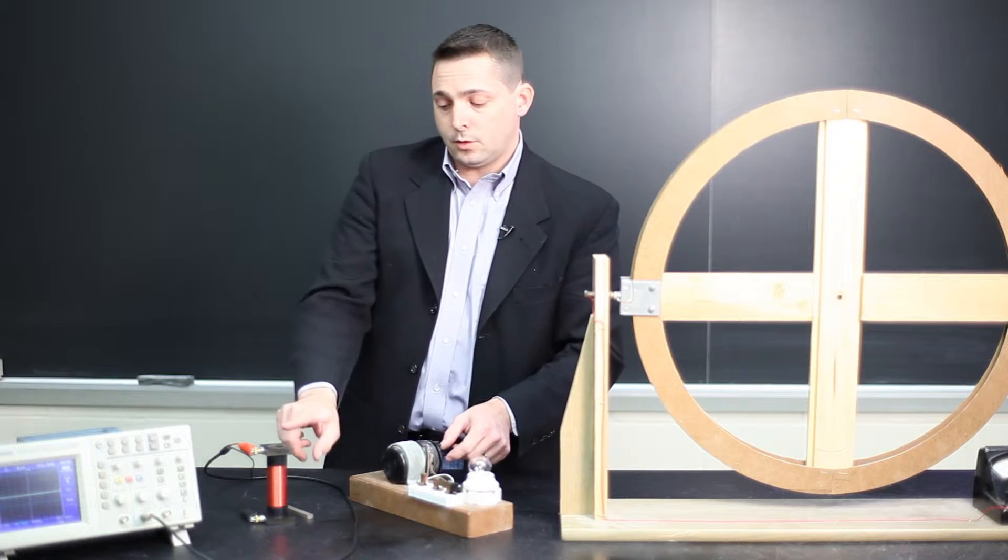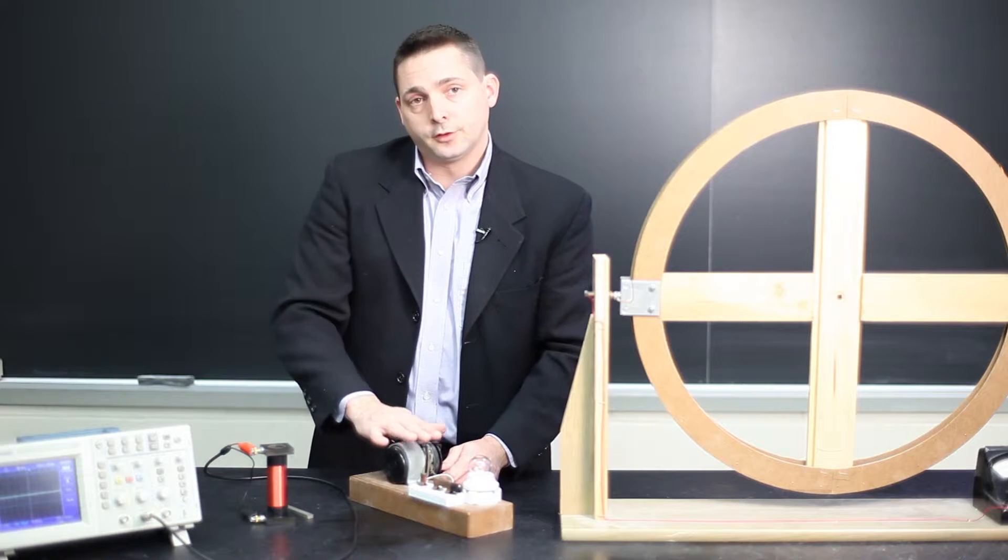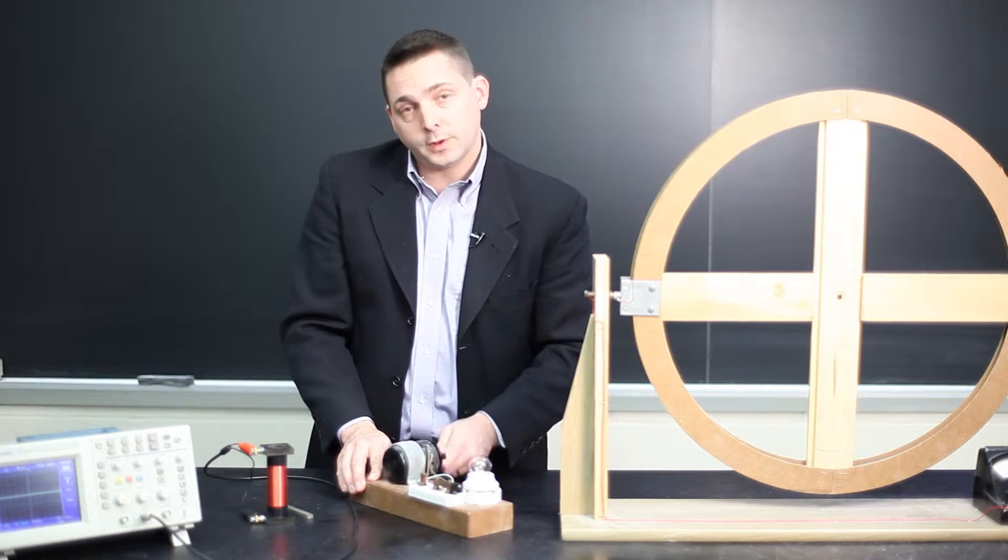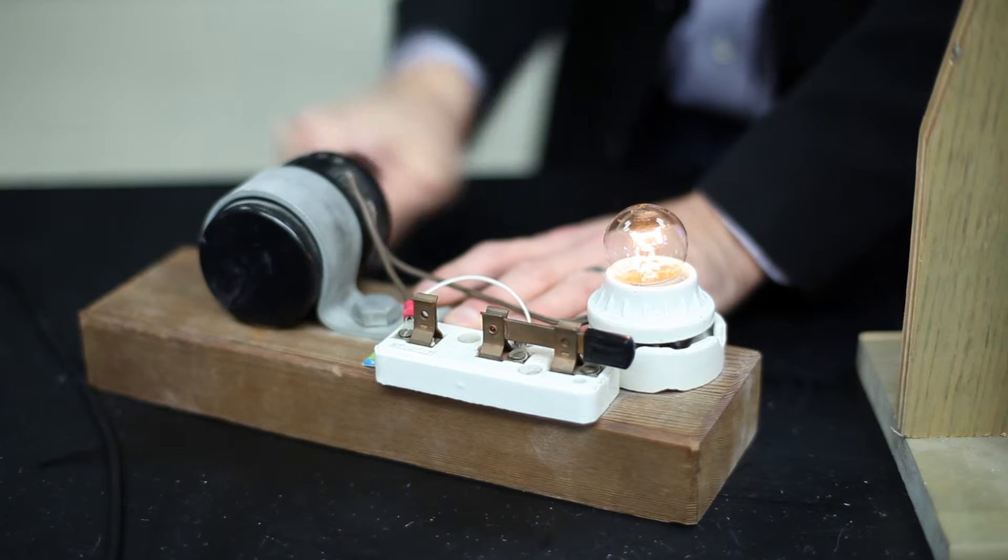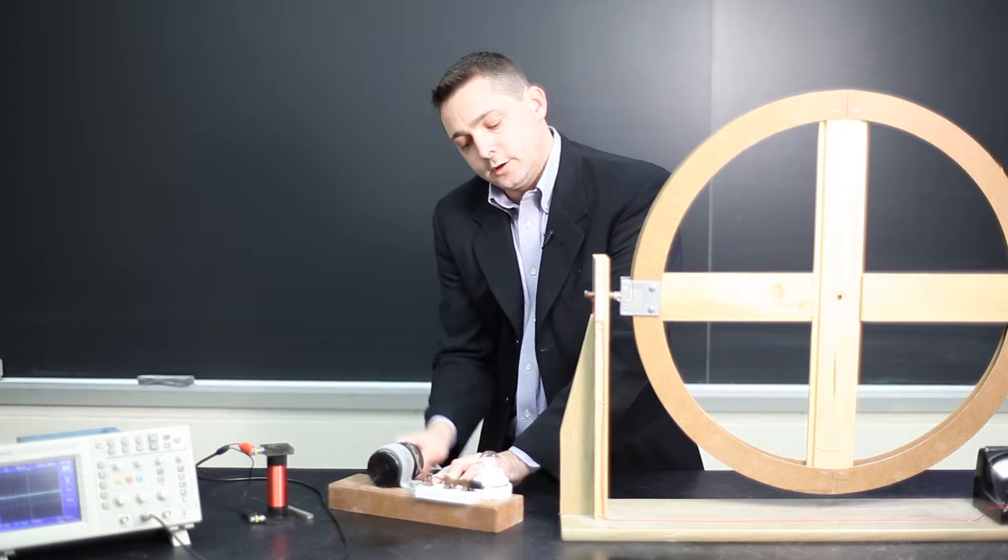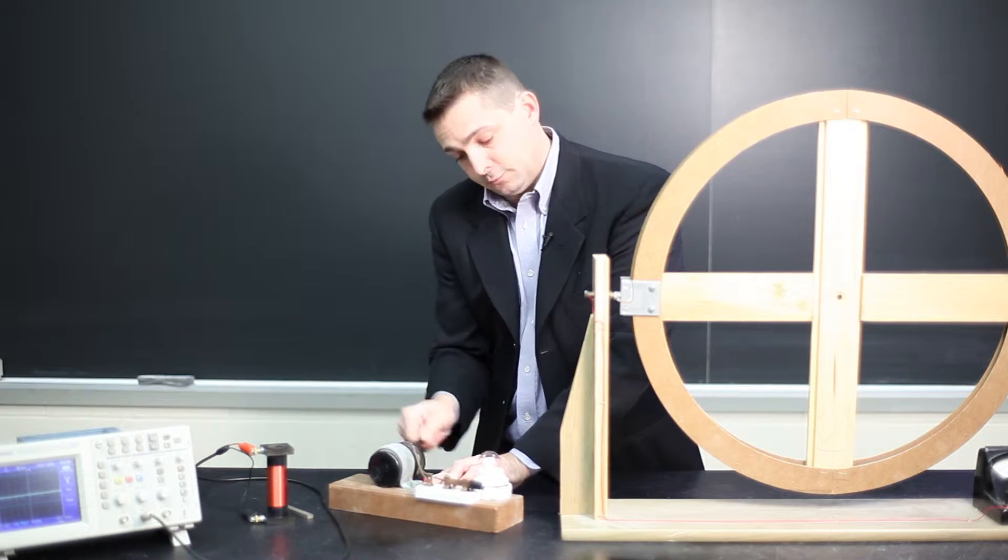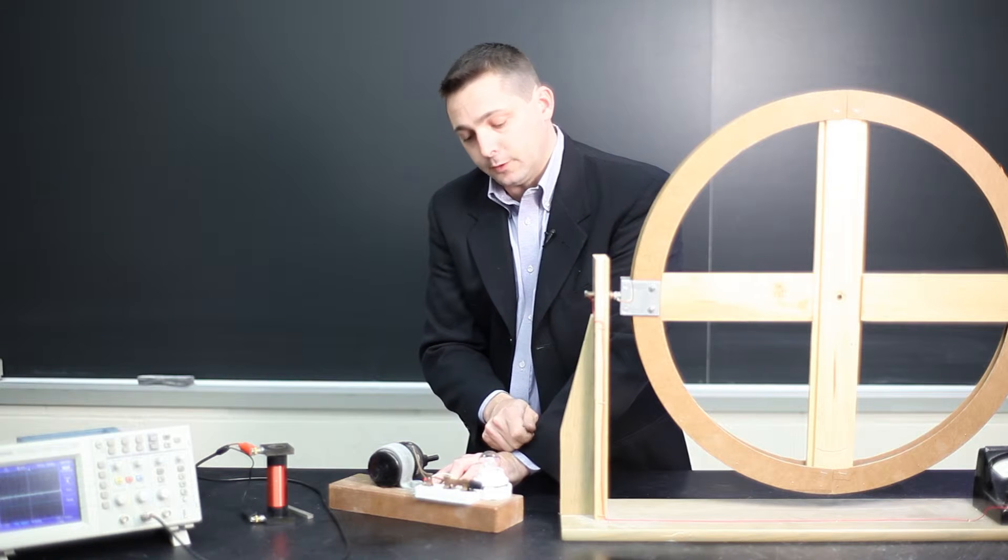we simply have a coil surrounded by magnets and when we spin the coil within the magnets, we create an electrical charge that can then be used to run your lights or anything else with electricity.